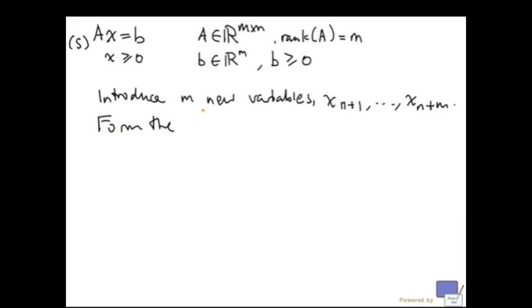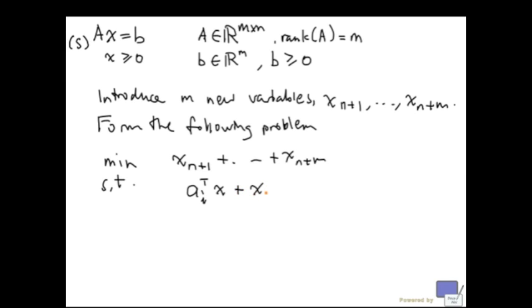Form the following problem. So, we are going to minimize the sum of these artificial variables. And the constraints will now be, say ai transpose is the ith row of a, times x, plus the artificial variable xn plus i, equal to bi. And, of course, all these variables will have to be non-negative.